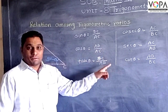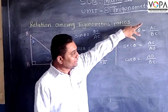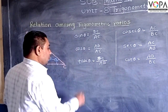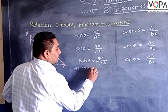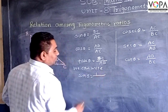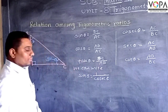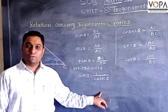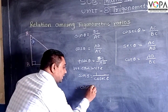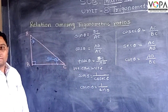So what are the relations between these ratios? If the ratio of sine theta is BC upon AC, then this ratio is equal to cosine theta. So we can write that sine theta is equal to 1 upon cosine theta, and in a similar way, cosine theta is equal to 1 upon sine theta.